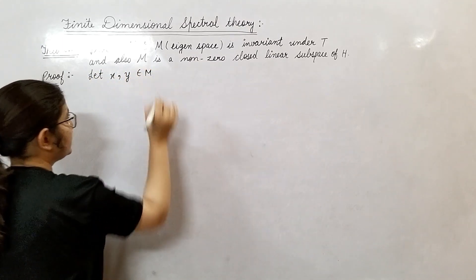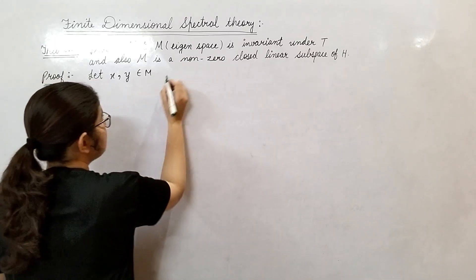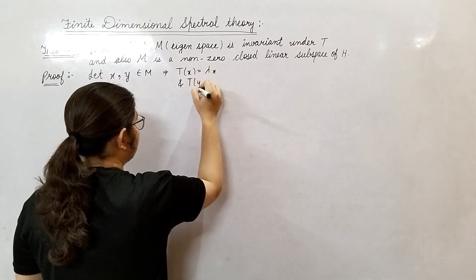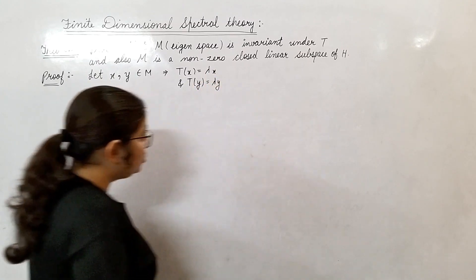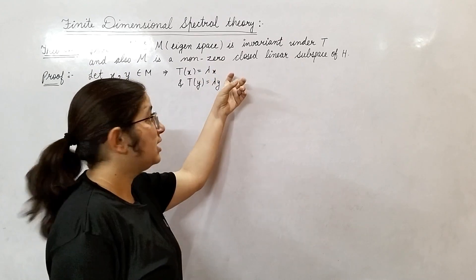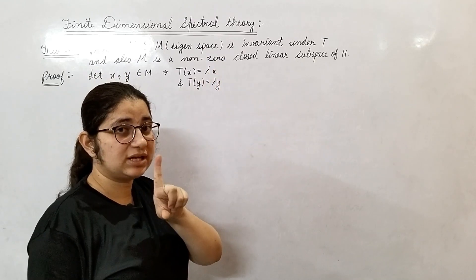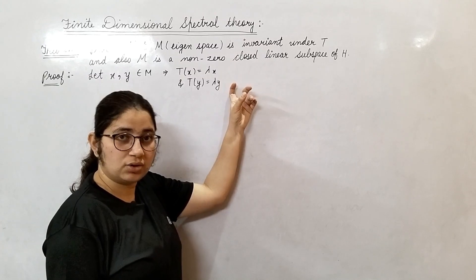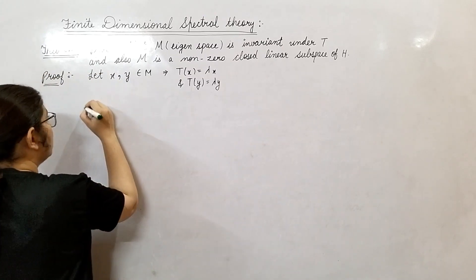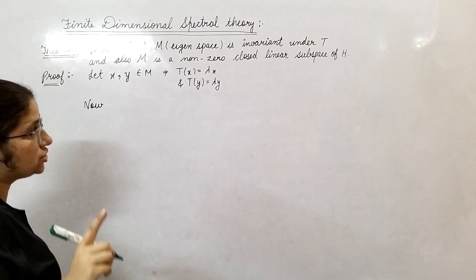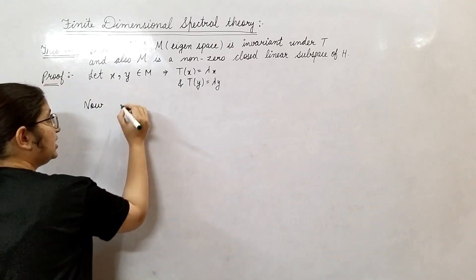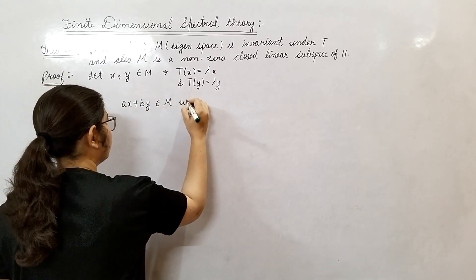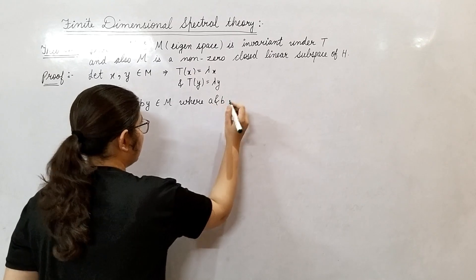Let X, Y belong to M. If X, Y belong to M, what does this imply? This implies T(X) equals lambda times X, and T(Y) equals lambda times Y. Don't get confused that lambda appears twice here — if you have a corresponding eigenspace, all vectors of M share the same lambda. These eigenvectors are different but lambda is common. Now, if we want to show that M is a closed linear subspace of H, we need to show that AX plus BY belongs to M, where A and B are scalars.